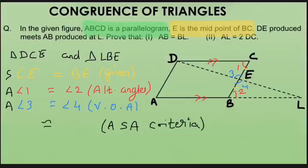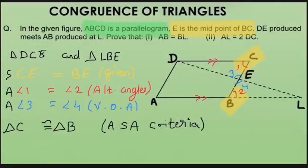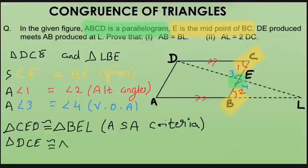The important thing is writing the congruency statement with the correct sequence of vertices. Angle 1 is at point C and angle 2 is at point B, so C corresponds to B. Angles 3 and 4 are both at point E, so E corresponds to E. Therefore point D corresponds to point L. Writing the first triangle as DCE, it is congruent to triangle LBE.